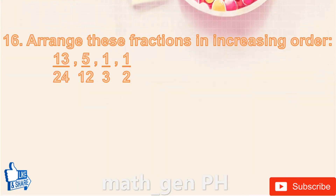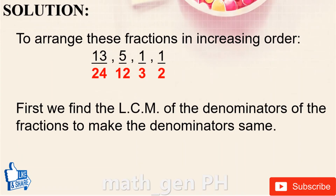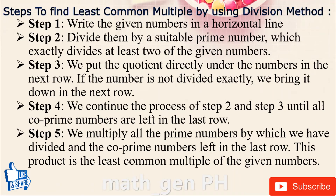Question number 16: arrange these fractions in increasing order — 13/24, 5/12, 1/3, 1/2. To arrange them, first find the LCM of the denominators 24, 12, 3, and 2 to make the denominators the same.